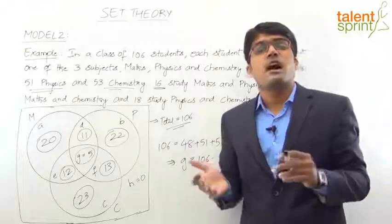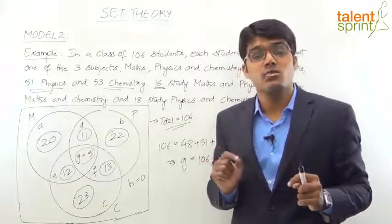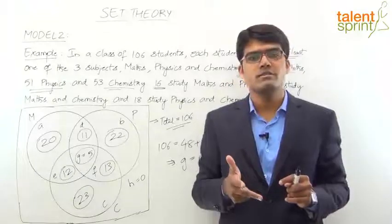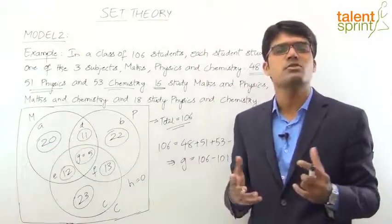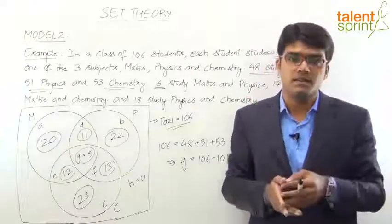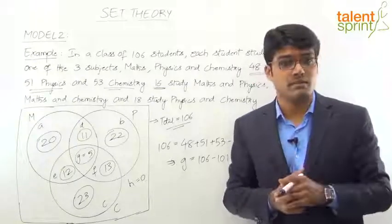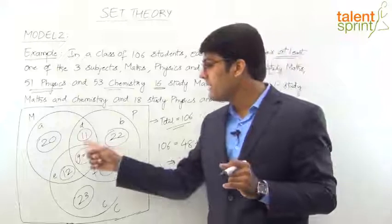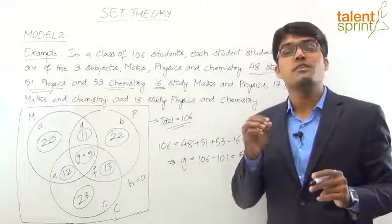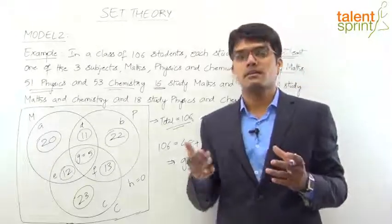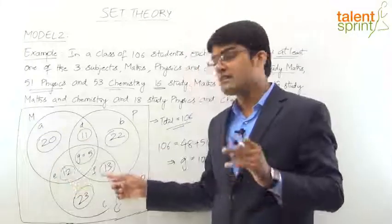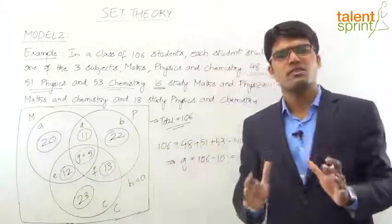Other question types: How many students study exactly one subject? That's only Maths + only Physics + only Chemistry = 20 + 22 + 23 = 65. How many study exactly two subjects? That's D + E + F = 11 + 12 + 13 = 36. How many study at least two subjects? That means 2 or more, so exactly two (D + E + F = 36) plus all three (G = 5) = 41. The key is to understand the question and select the correct regions.